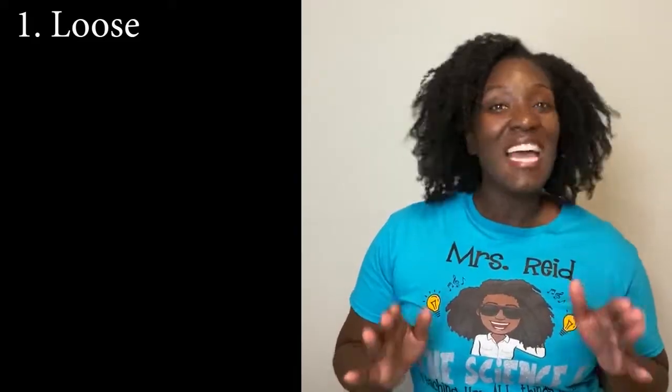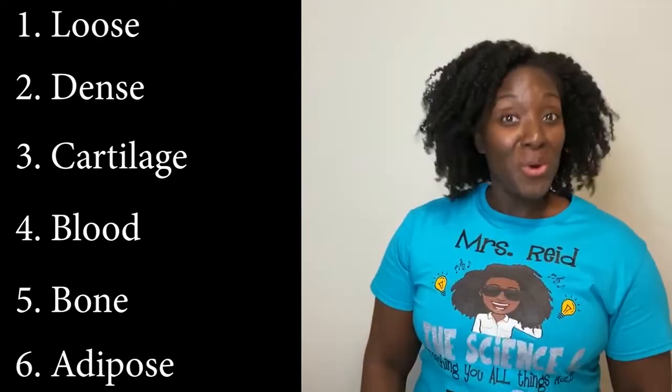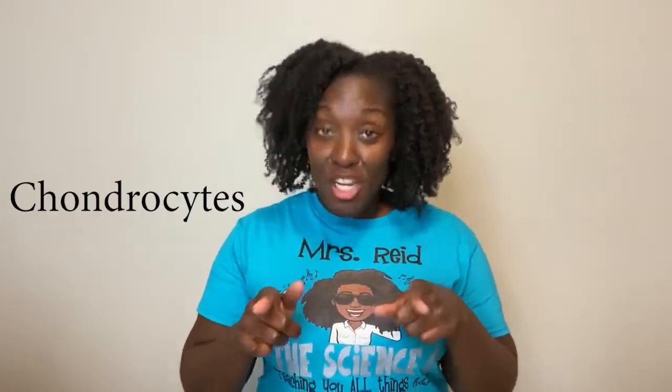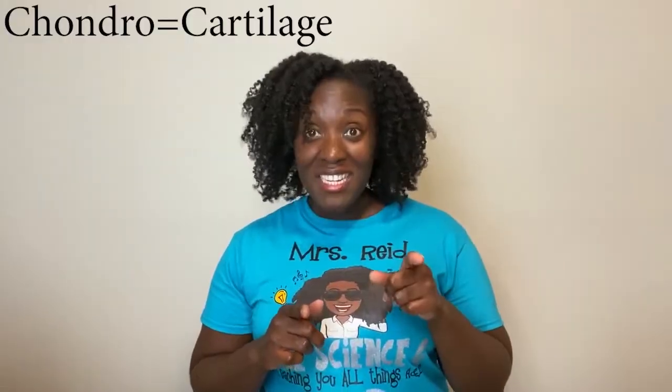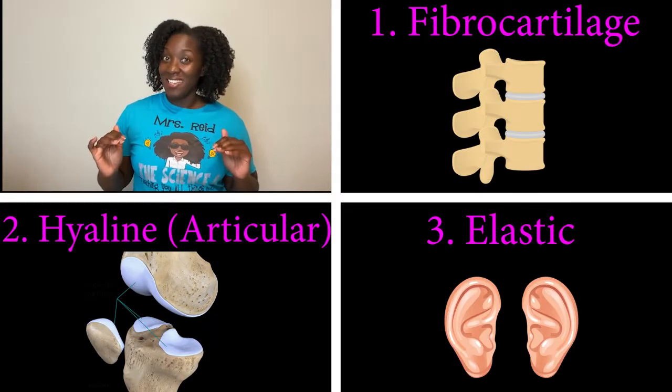Connective tissue is divided into loose and dense connective tissue, cartilage, blood, bone, and adipose tissue. We're going to focus on four types. First up is cartilage. Cartilage has chondrocytes — chondro means cartilage, cyte means cell. Cartilage is also avascular, meaning it has no blood vessels. That's why cartilage injuries take the longest to heal. There are three types of cartilage: fibrocartilage, hyaline cartilage, and elastic cartilage.